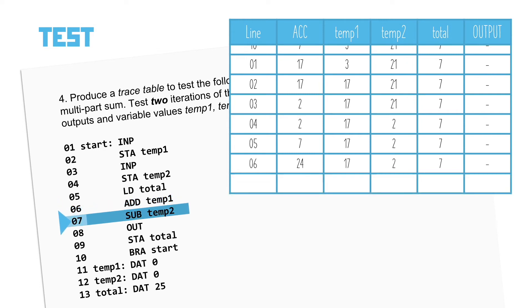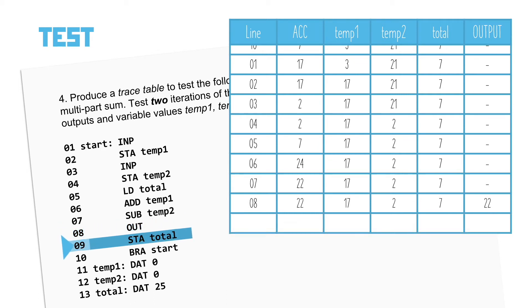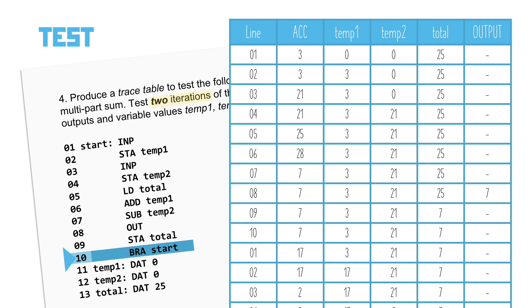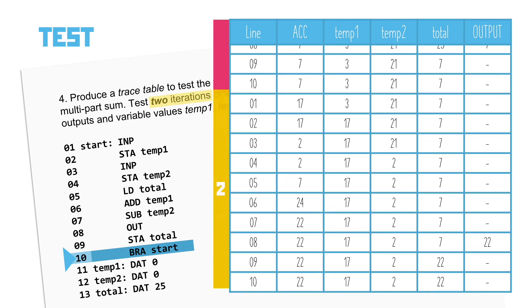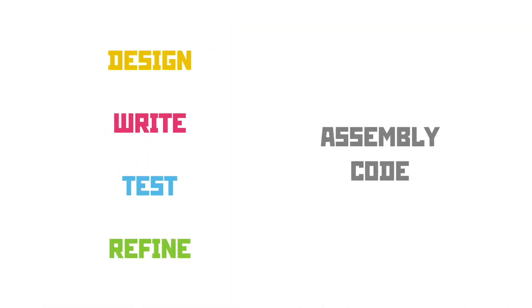Line 6 asks us to add the value of temp1 to the accumulator — that's 7 plus 17, giving us 24. Then we're on to our subtract instruction, asking us to take the value of temp2 away from the accumulator — that's 24 minus 2 giving us 22. An output command on line 8 outputs the value of the accumulator, which is 22. We store that 22 in total with the line 9 store instruction, then we branch again back to line 1. That's the end of our second iteration — we've been around the loop twice, so that's really all testing is: working through the code line by line and applying the instructions to the data set you've been asked to work with.